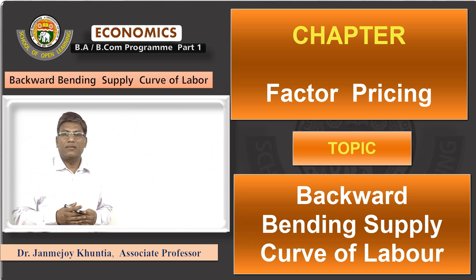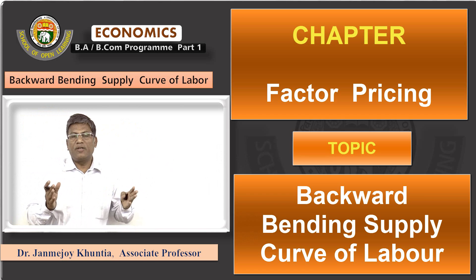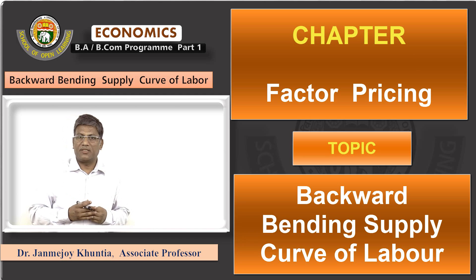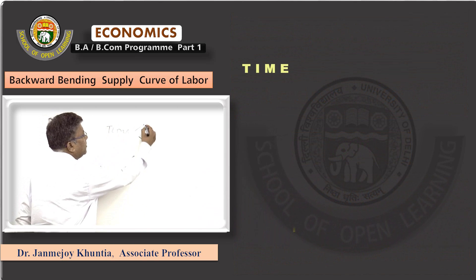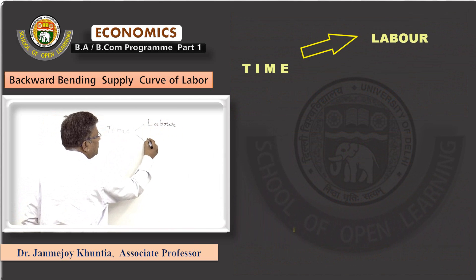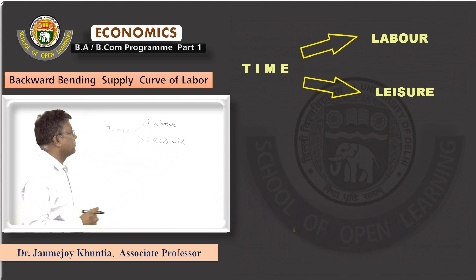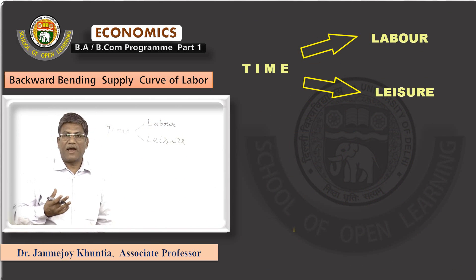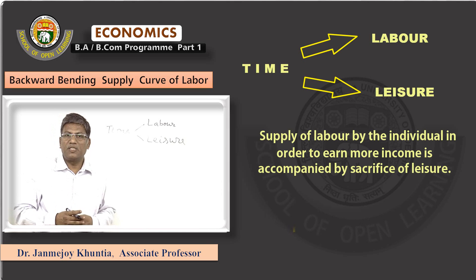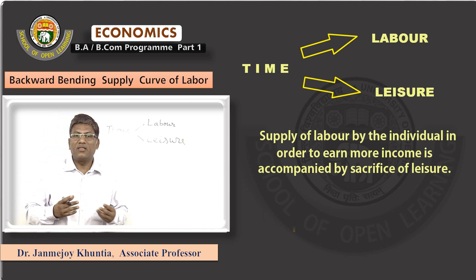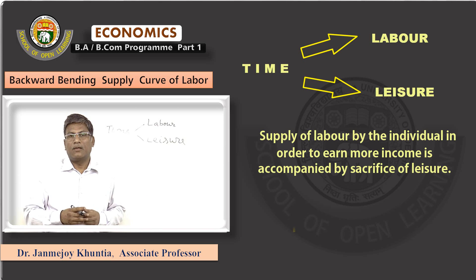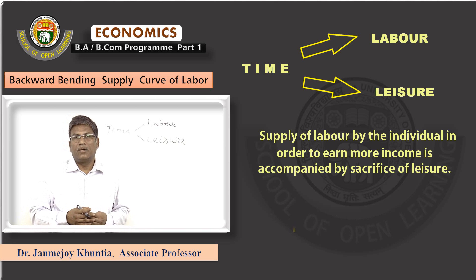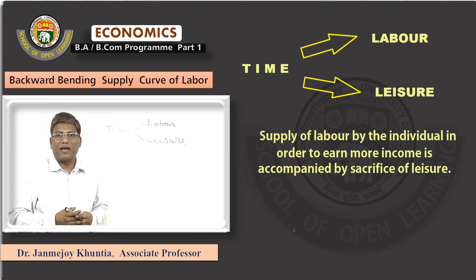The individual has time to divide between labour supply and leisure activities. Time can be divided between labour and leisure. Labour supply is associated with income generation — when the individual needs money for a living and wants income to be generated, he or she will supply labour, but that can be possible only by sacrificing leisure.